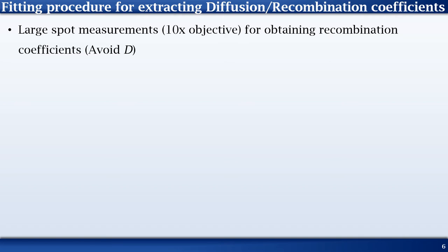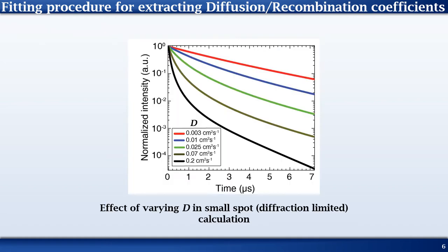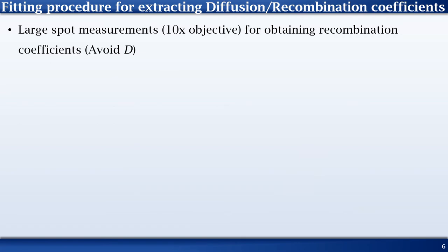Let us now look at the second part of the fitting procedure used to extract the diffusion and recombination coefficients. When using a high magnification objective, diffusion actually has a direct impact on the shape of the lifetime curve. This is seen on this figure where as D increases, the curvature is more pronounced at earlier times. Hence, to measure the recombination coefficients correctly, we safely negate the effect of D by using a lower magnification objective of 10x.